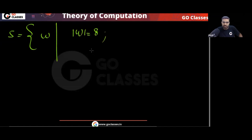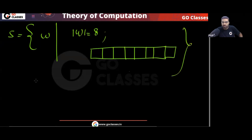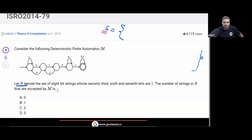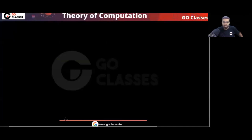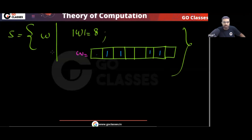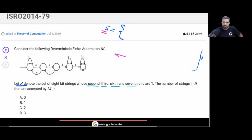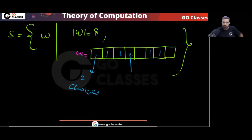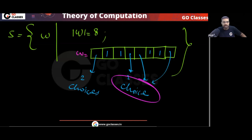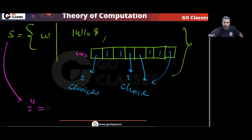So this string has positions 1 through 8. Positions 2, 3, 6, and 7 are fixed as 1. The remaining 4 positions — positions 1, 4, 5, and 8 — each have 2 choices: 0 or 1. So in set S you have 2^4 = 16 strings. Remember, in this set S you have 16 strings.